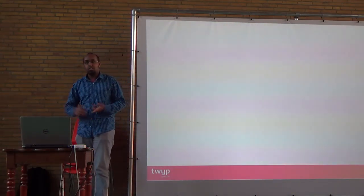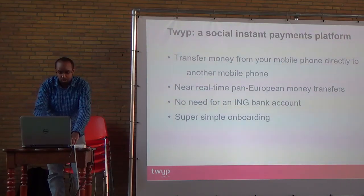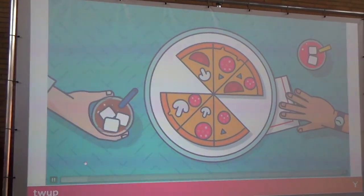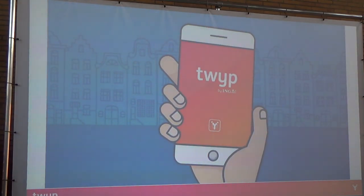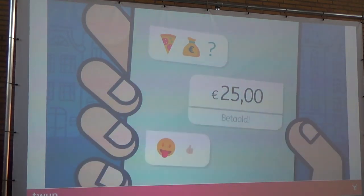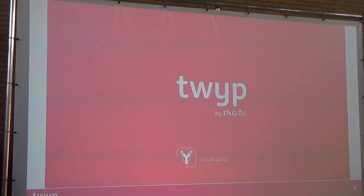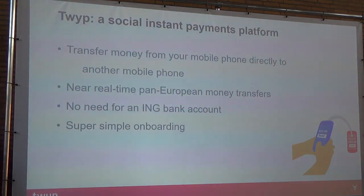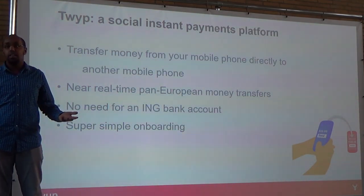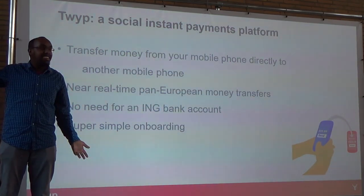Instead of just explaining what TWIP is, because that's boring, I'd rather show you a video of it. I do have to warn you, the video is in Dutch. So TWIP is a peer-to-peer payment application where you can pay your friends in an easy way. Because usually, if you want to pay people, you need to know their IBAN — and who knows their own IBAN, for example.